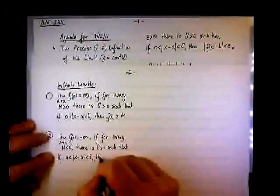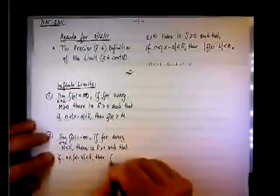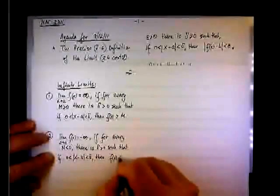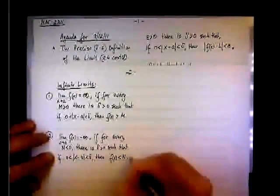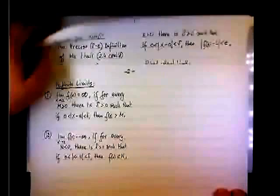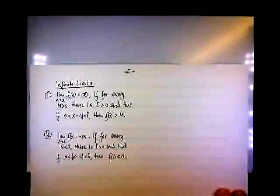Then, so if we have this delta, then f of x will be less than n, no matter how negative is n. And a couple of sketches to demonstrate this.